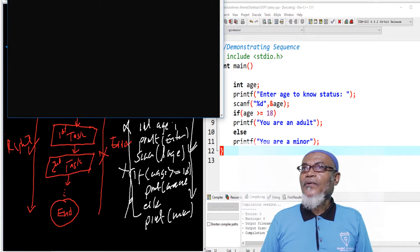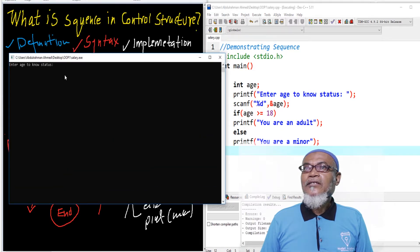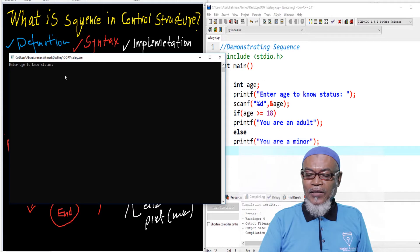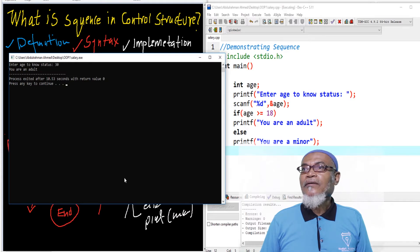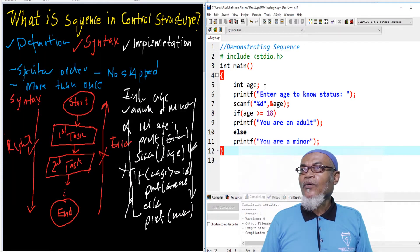So when we run this particular program, it prompts me, enter your age to know your status. So maybe I'll enter my age as 30. And actually, the message comes up, you are an adult. So let's see now if we change the order.